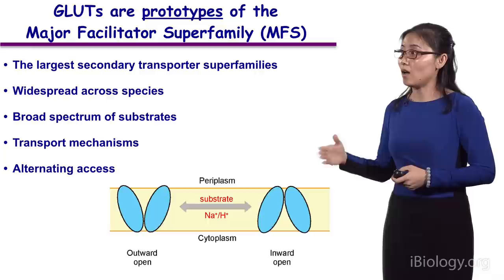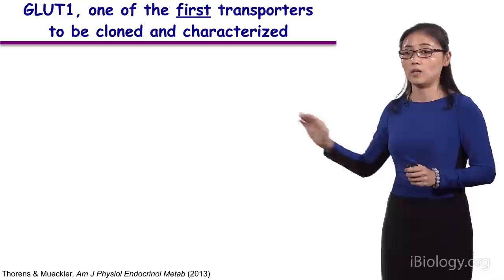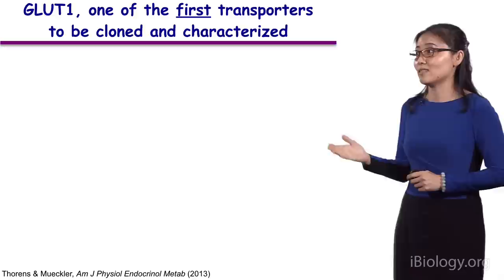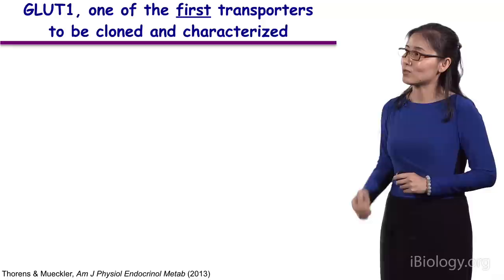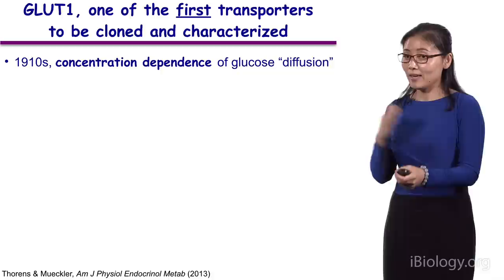We thought that because GLUTs are the prototypes in the understanding of this family, structural and biochemical characterizations of GLUTs may also shed light on understanding other members of this largest family. Why is it a prototype, especially GLUT1? Because it was one of the first transporters to be cloned and characterized. So let me bring you to the history.